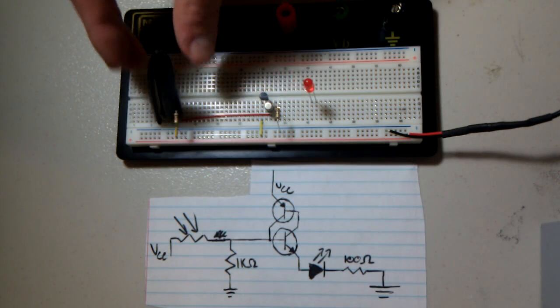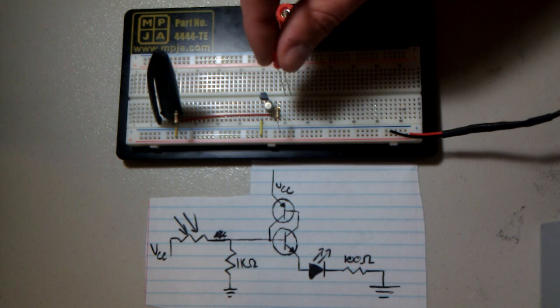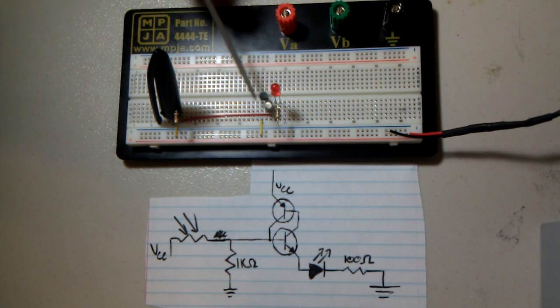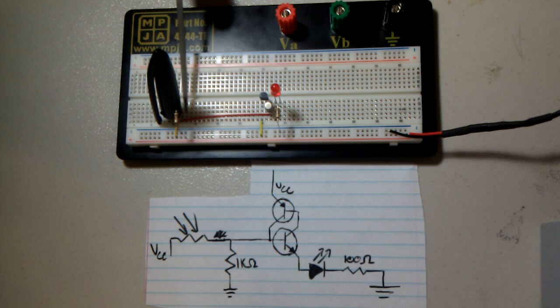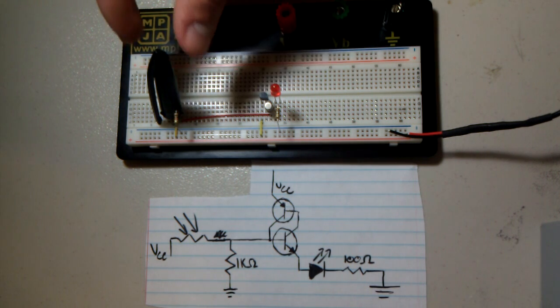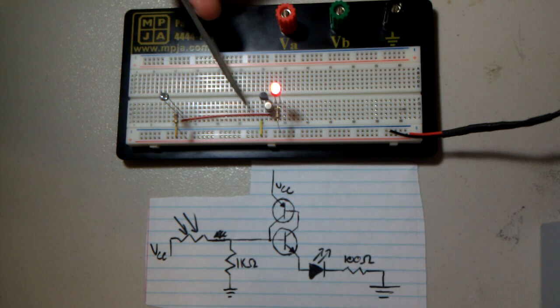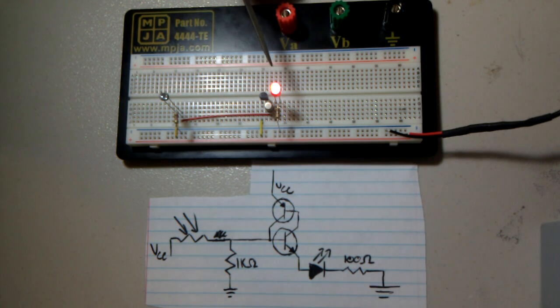You can cover up the photoresistor, complete the circuit again. There isn't current flowing through the thyristor because the voltage to the input pin is too low. As soon as you uncover the photoresistor, the voltage to the input pin rises, current flows, the thyristor turns on, passes current through the LED, the LED lights.